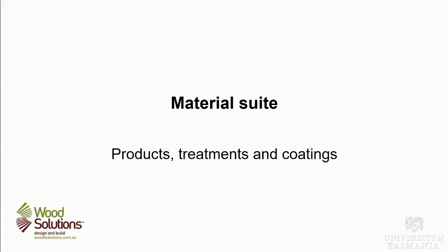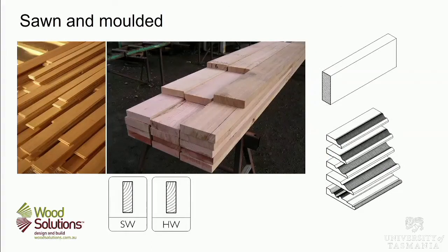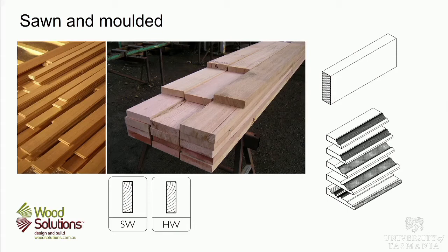Moving on to the product suite: the first category is sawn and molded board, available in hardwoods or softwoods. We can have rough-sawn boards that we simply put on a wall — I'll show you jobs where that's the highlight — or we can mold them into particular shapes. Working with wood is a reductive process: you start with something big and make smaller pieces out of it. There's then a whole lot of sheet materials: plywood, oriented strand board (OSB), medium density fiberboard (MDF), and high density fiberboard. High density fiberboard is what you'd call Masonite.